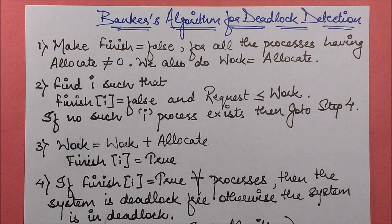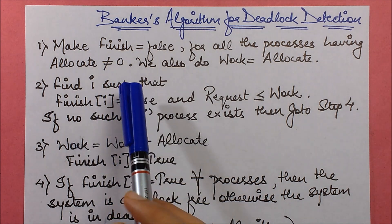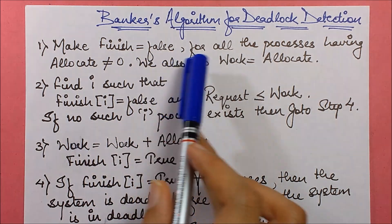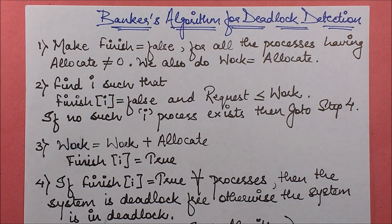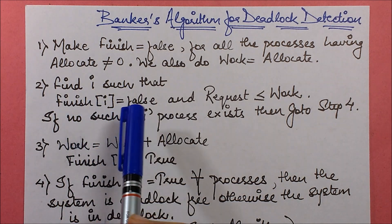In this session we are going to discuss the Banker's Algorithm for deadlock detection. The first step says: make finish equals to false for all processes having allocate not equals to zero, and also set work equals to allocate. Allocate not equals to zero means they have some resources allocated to them.